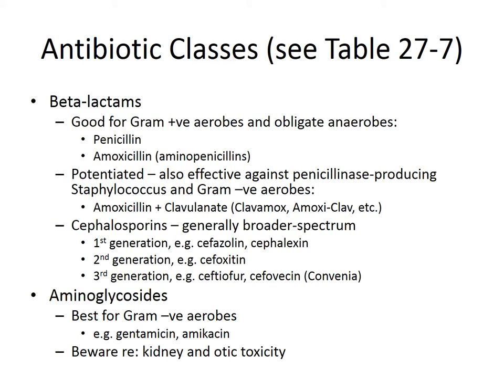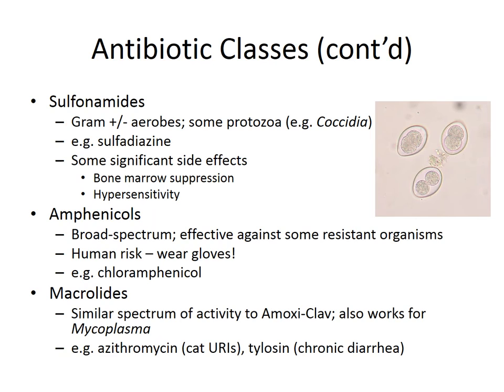Aminoglycosides are used for gram-negative aerobes, but they're generally quite toxic so we only use them when absolutely necessary. Gentamicin is used in topical preparations, usually for the eyes and sometimes the skin. Amikacin is not used very commonly. We have to be careful about kidney toxicity and ototoxicity — ear toxicity — with these drugs, so we use them mainly in a topical context.